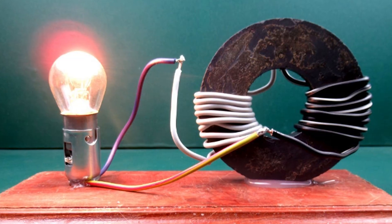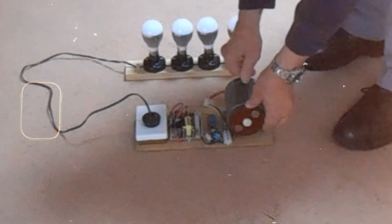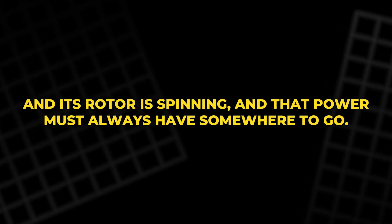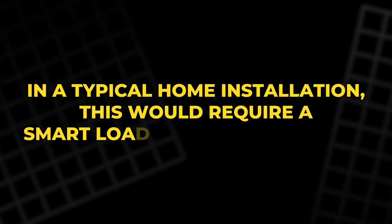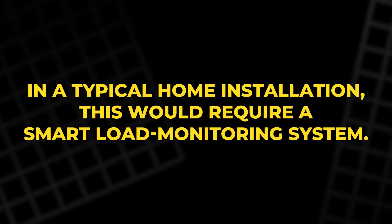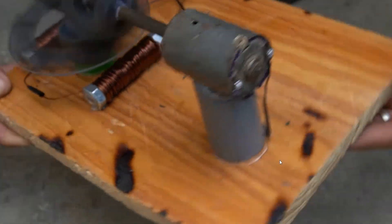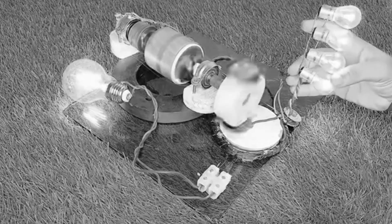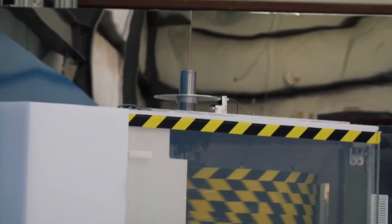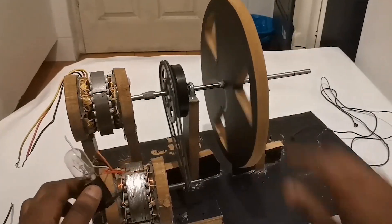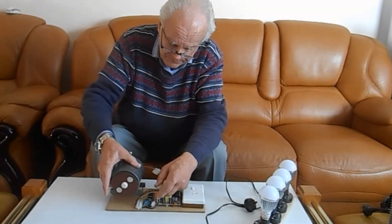A working zero-point generator will always be producing power as long as its receiver is engaged and its rotor is spinning. And that power must always have somewhere to go. In a typical home installation, this would require a smart load monitoring system. Such a system would constantly measure how much power the house is actually using. Whenever household demand falls below the generator's output, the monitoring system would automatically switch in power-wasting devices, such as heat banks or resistor arrays, to soak up the extra energy. If this is not done, the unused power would again start to overheat the generator and could lead to self-destruction.